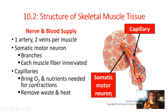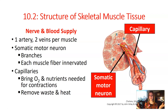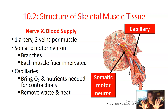Muscles have arteries and capillaries that bring oxygen and nutrients to our muscle fibers, and veins that take waste products away. Importantly, every single muscle fiber — every single muscle cell — is innervated by a motor neuron. If a muscle fiber is not innervated by a motor neuron, it cannot contract. Muscle fibers must have nervous stimulation in order to contract.